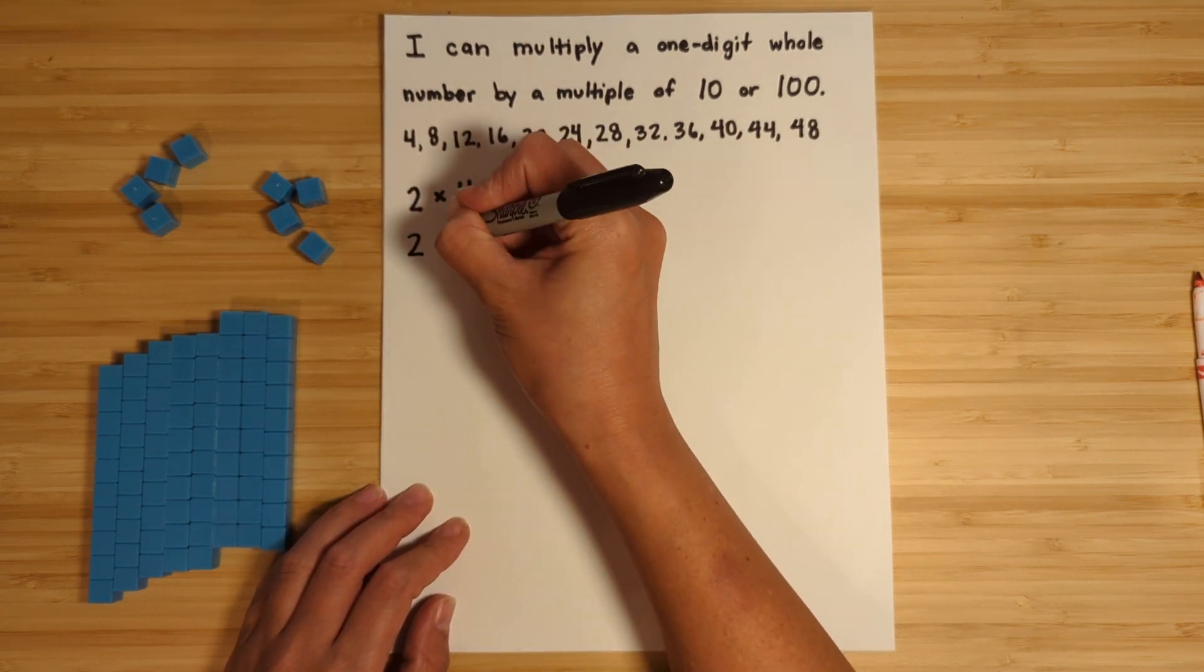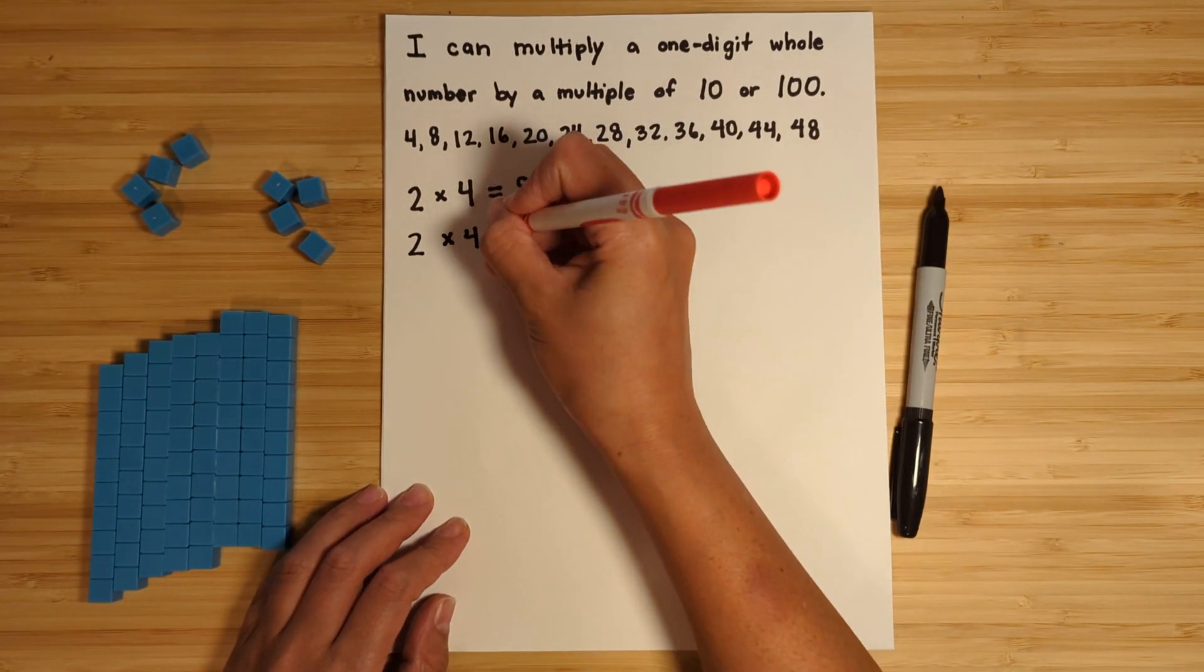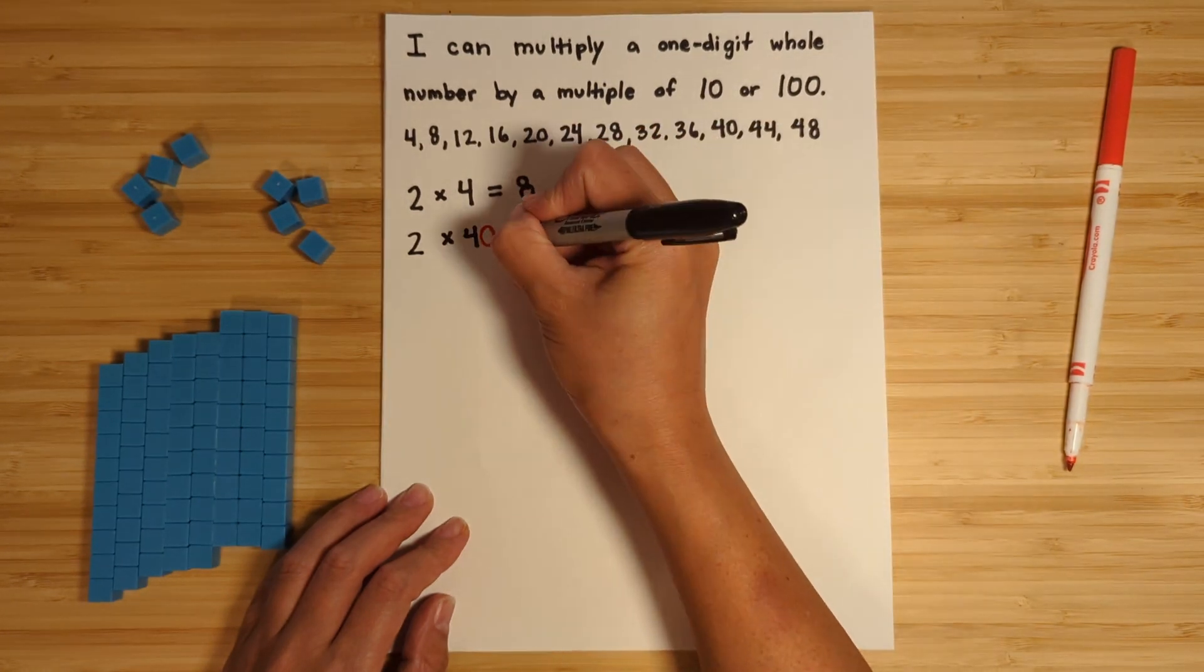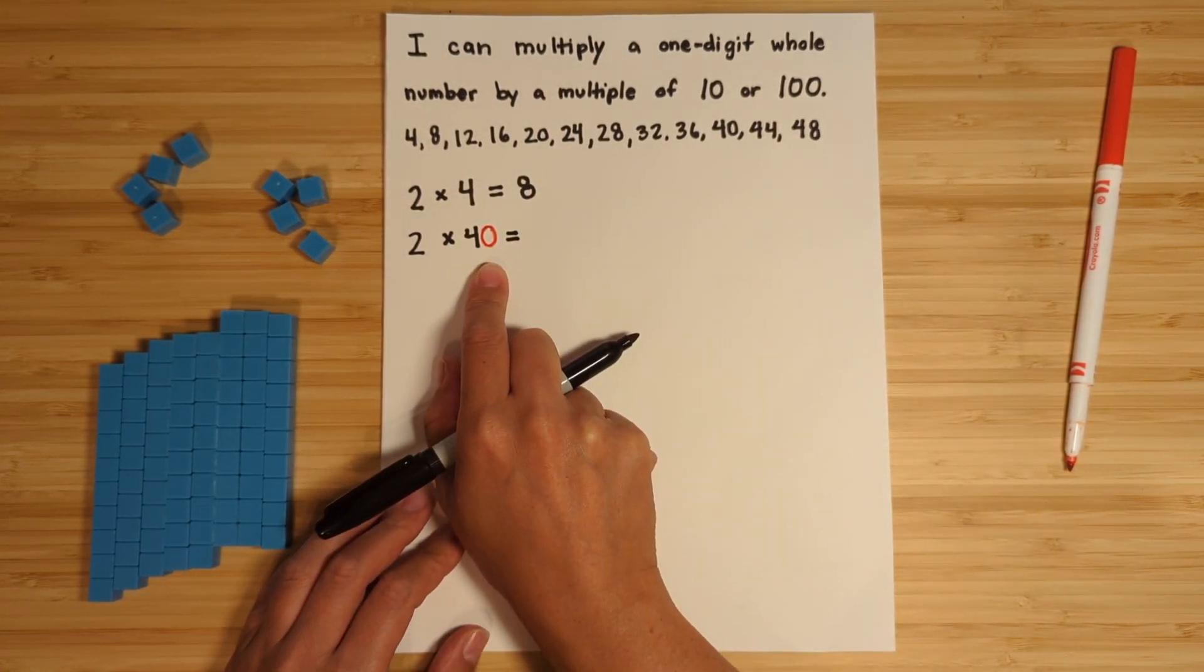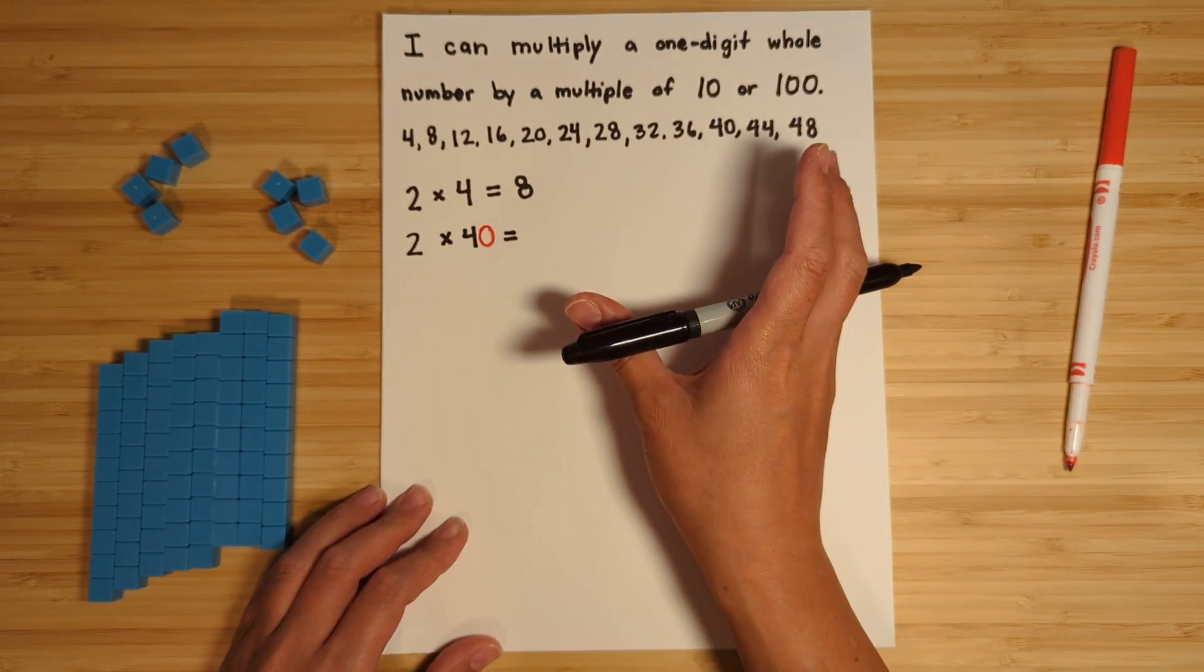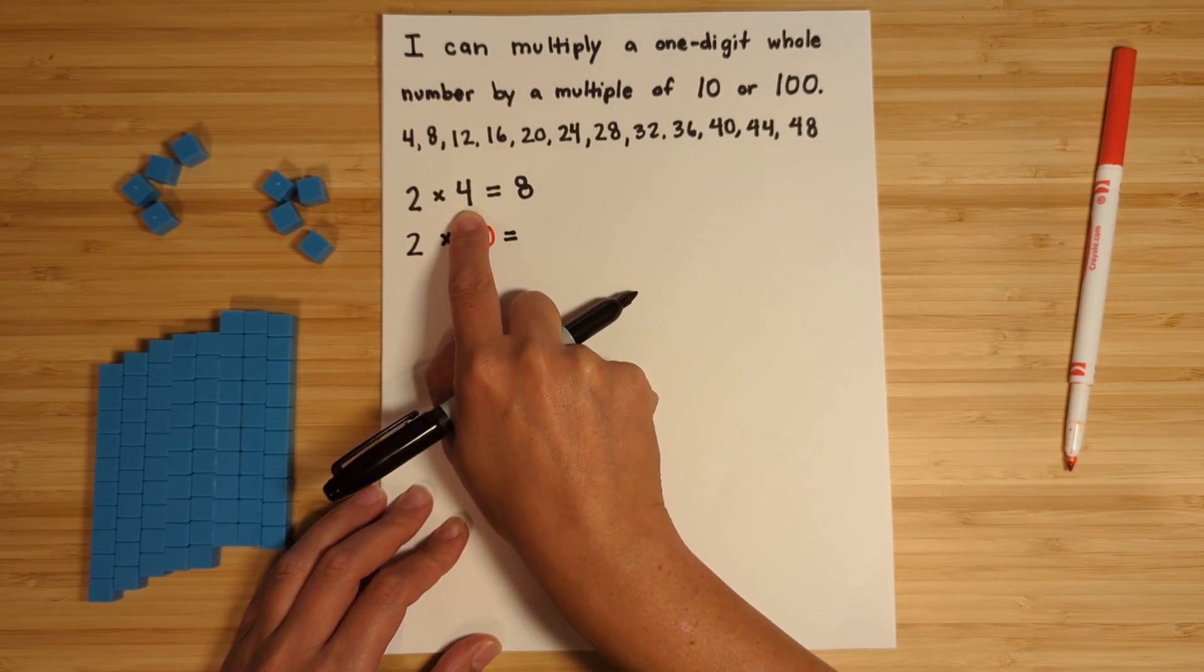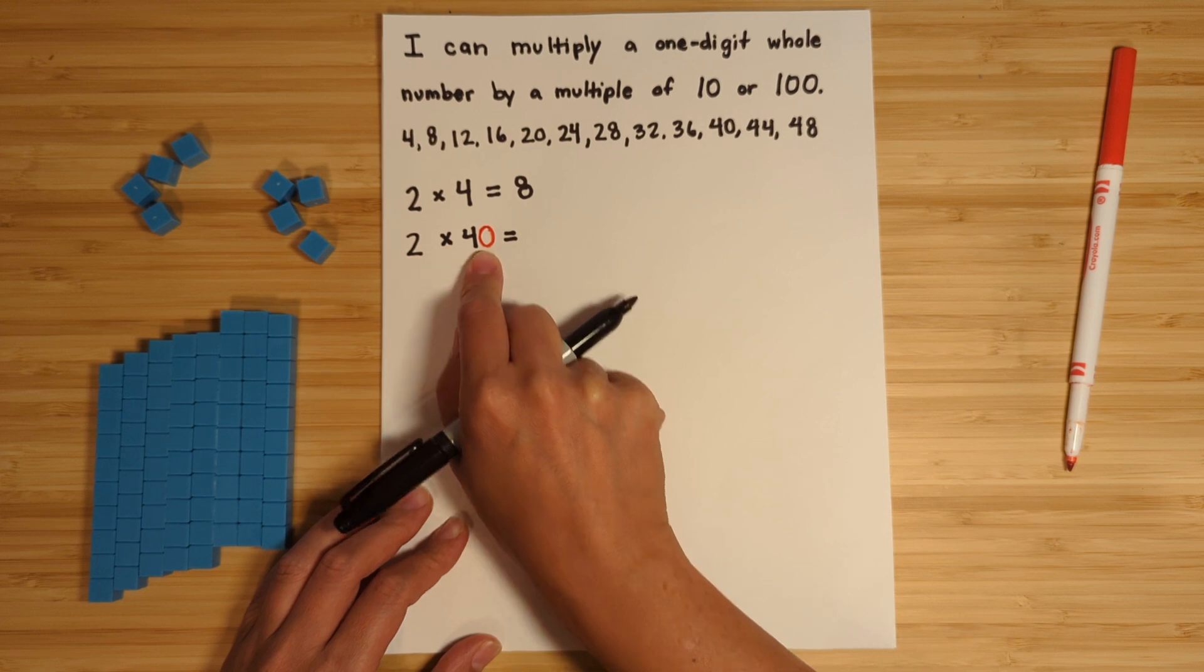Now let's look at two times - which is the standard for three - let's look at two times 40. Now we have a multiple of 10, which is 40 instead of four, and now we're trying to figure out what two times 40 is. So the point of this standard is for you to be able to realize that because you know your multiples of the single digit four, you can figure out what two times 40 is by thinking of 40 as multiples.